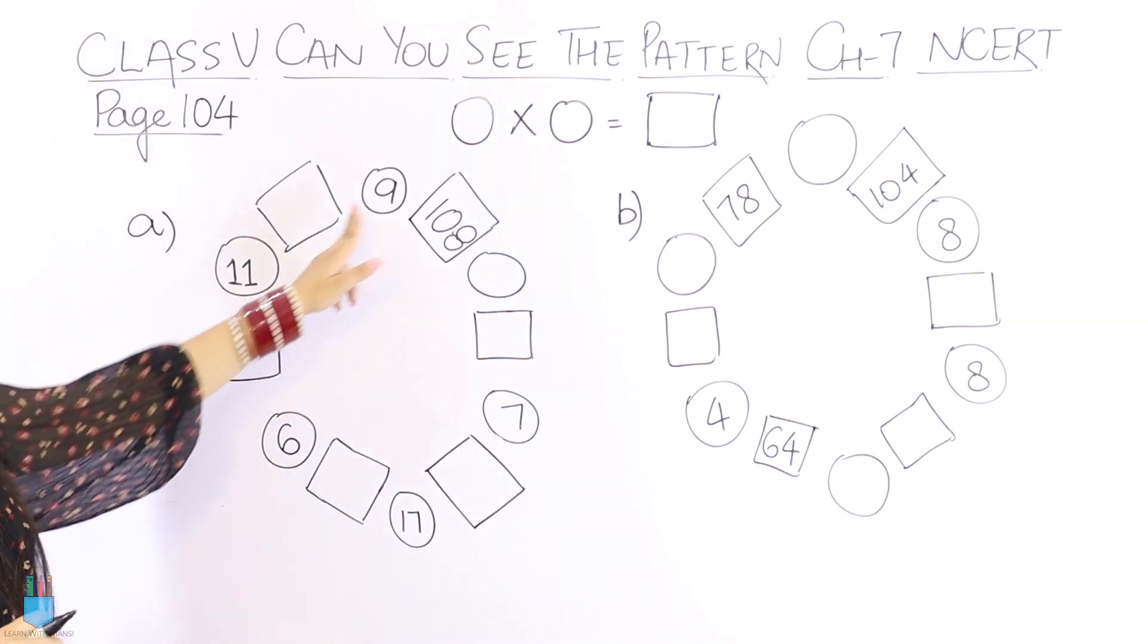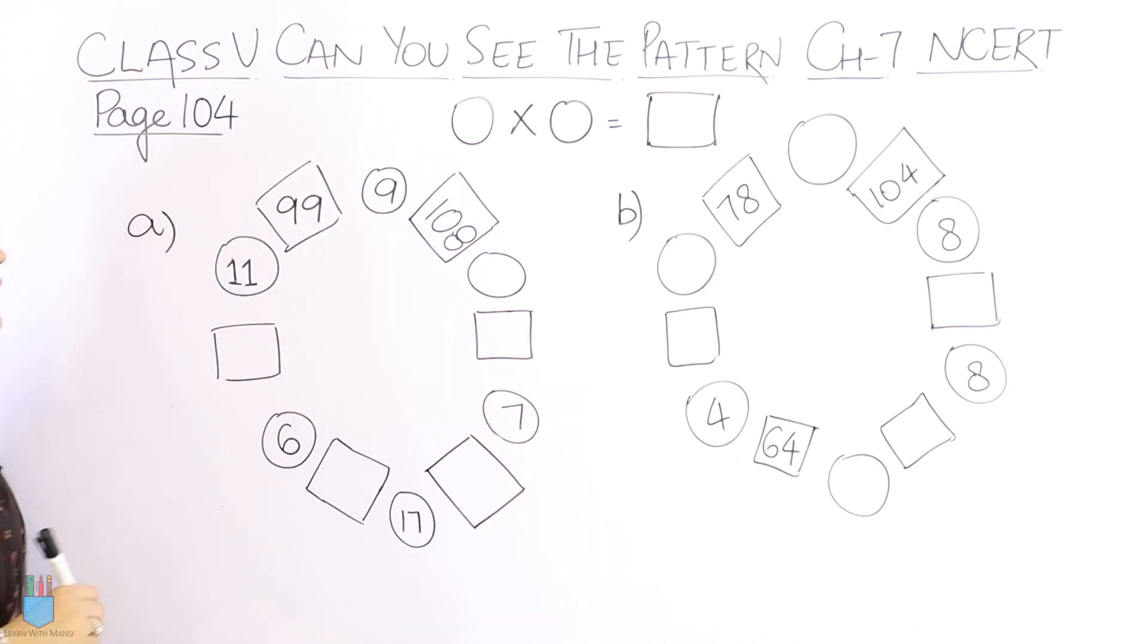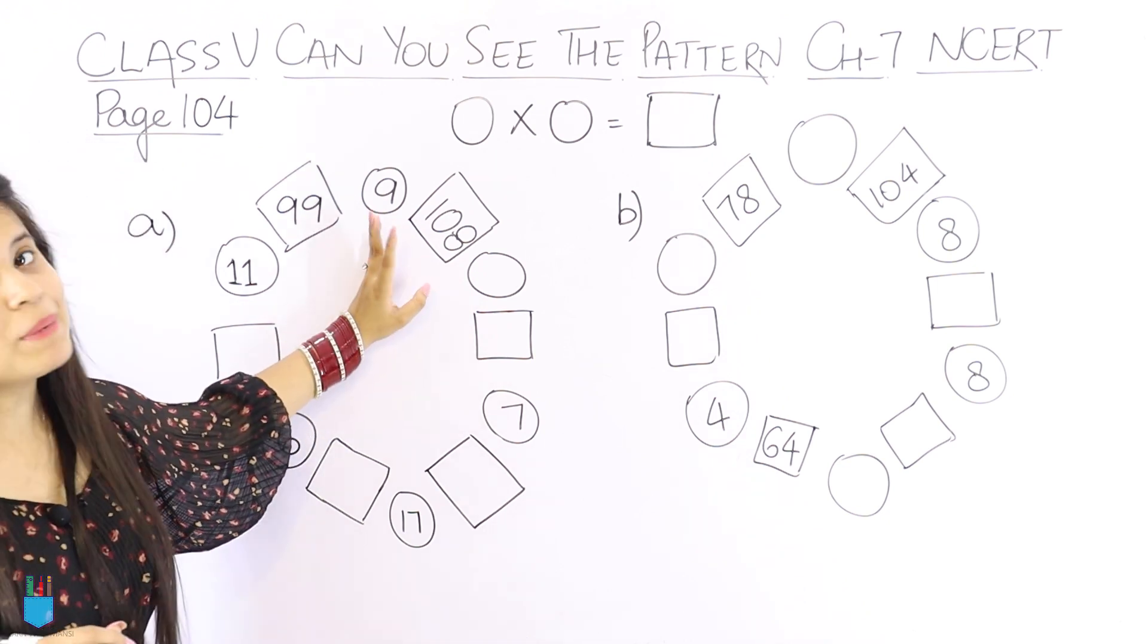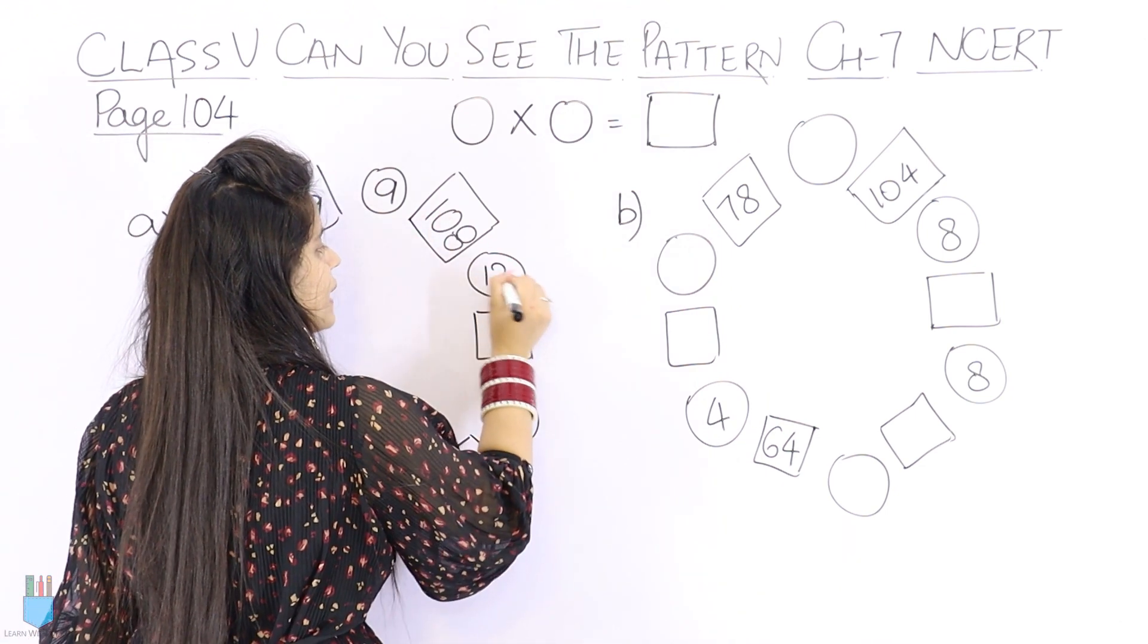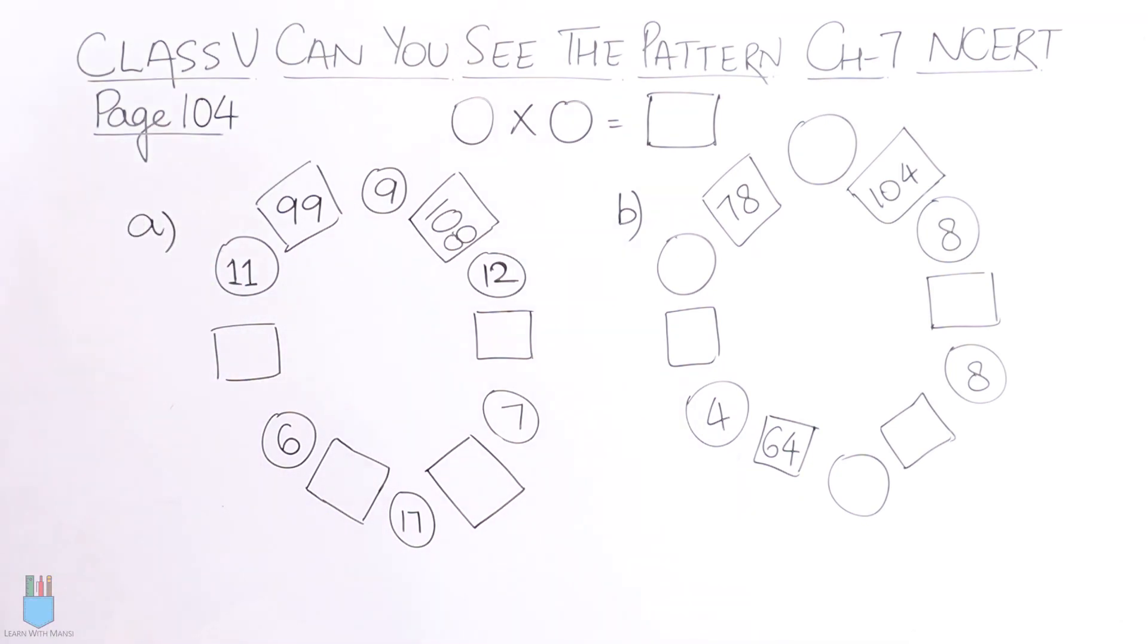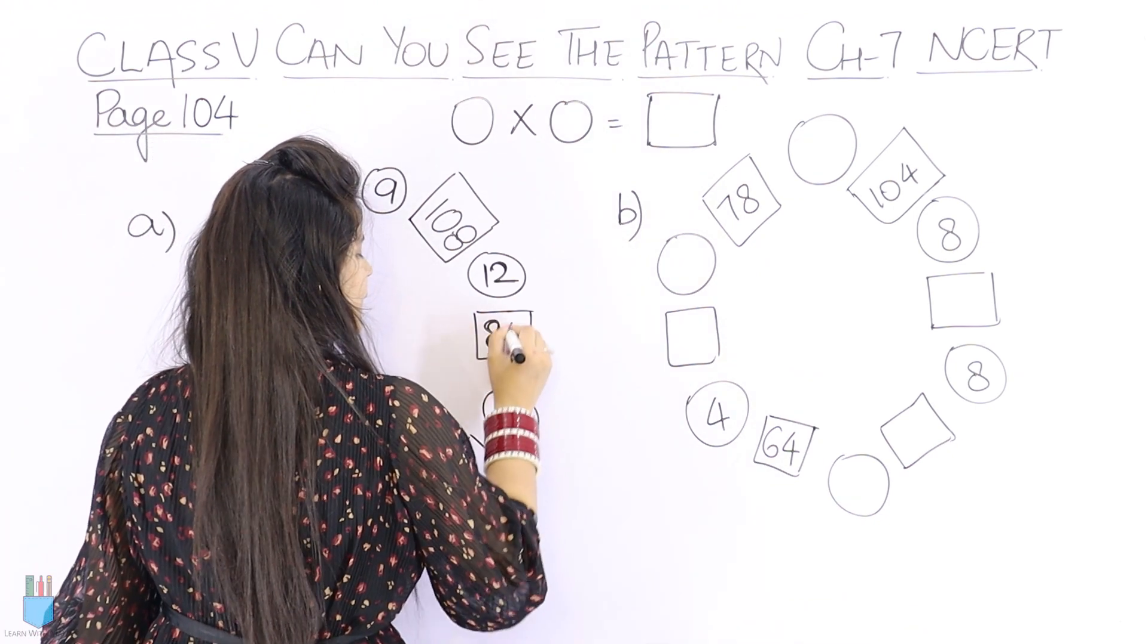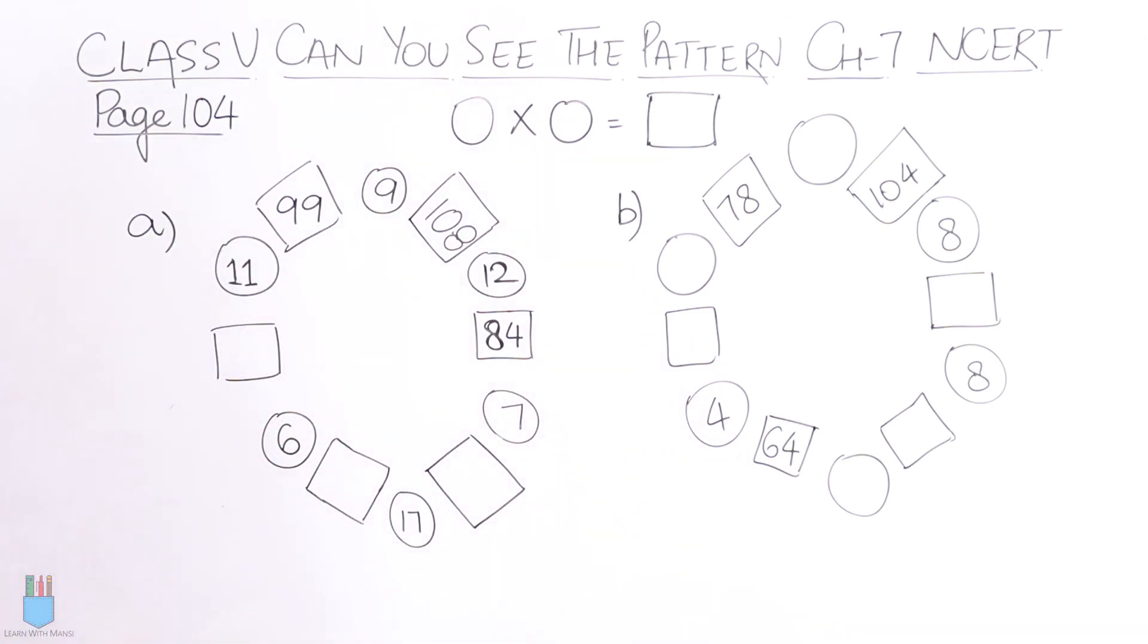So here 11 into 9, 99, simple. We will write 99 here. Now 9 into what will be 108? Meaning if we multiply 9, so we know that 12 into 9 is 108. So this will come here 12. Then we have two numbers in the circle. So 12 into 7 is 84. So this will come here 84. Then 17 into 7.